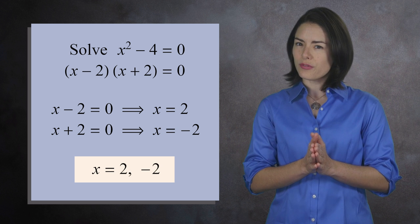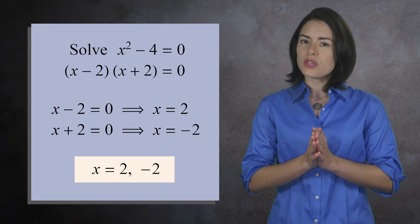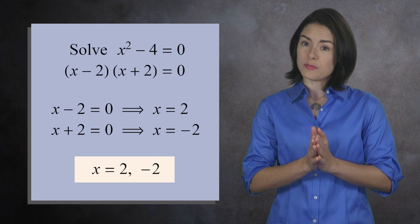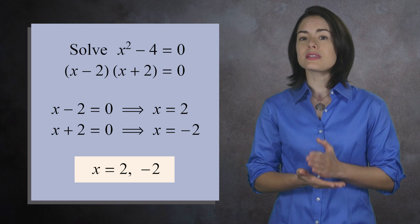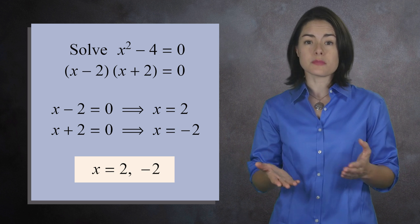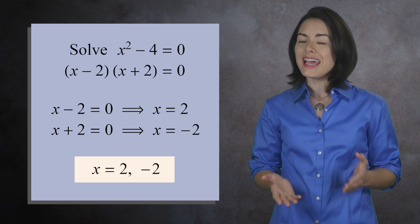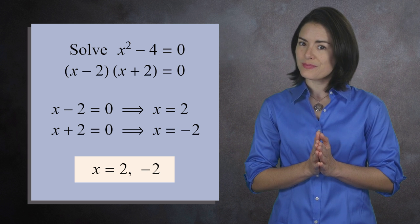This seems straightforward, right? But to solve this equation, we used a big assumption: that if the product of two terms is 0, then one of the terms must be 0. In abstract algebra, this isn't always true.